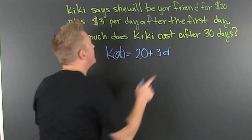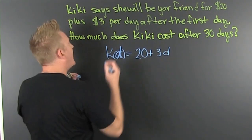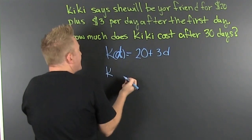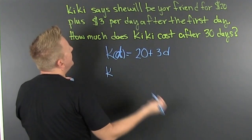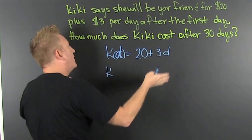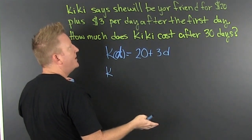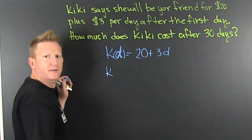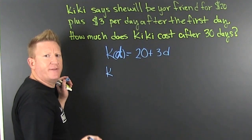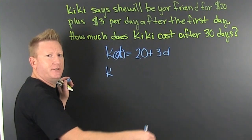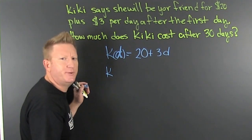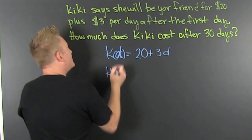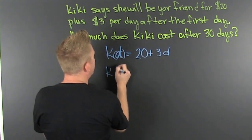So after 30 days, let's see how much Kiki cost. It doesn't have to be Kiki — it could be anything. Like your cell phone was $700 plus $75 for every month thereafter, for perpetuity, because you're never going to get rid of your cell. Anyway, it adds up.